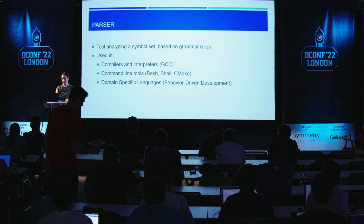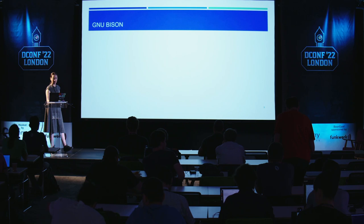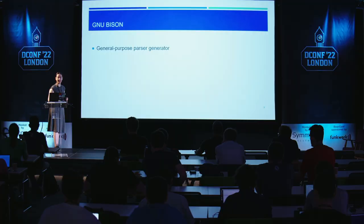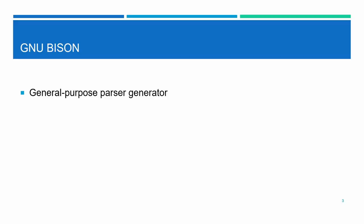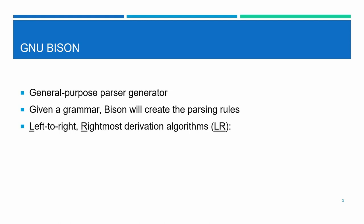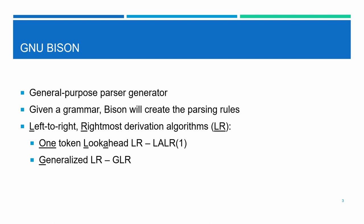Bison is a general-purpose parser generator. Through abuse of terminology, most people refer to it as just a parser, but that's somewhat incorrect because it needs a grammar to generate the parsing rules. Bison is also the de facto LR parser generator — LR standing for left-to-right, right-most derivation. Bison implements two algorithms: the deterministic LALR(1), which needs one token look-ahead, and the non-deterministic GLR, or generalized LR.